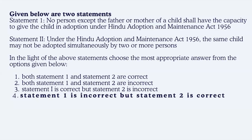If you consider Section 9 of the Hindu Adoption and Maintenance Act, subsection (1) states that no person except the father, mother, or guardian of a child shall have the capacity to give the child in adoption. Notice that 'guardian' is also included, which means Statement one is incorrect as stated.